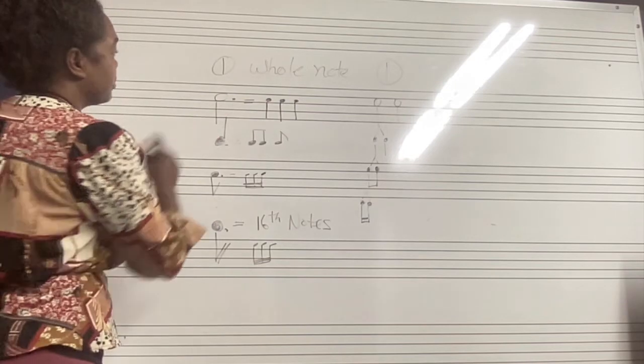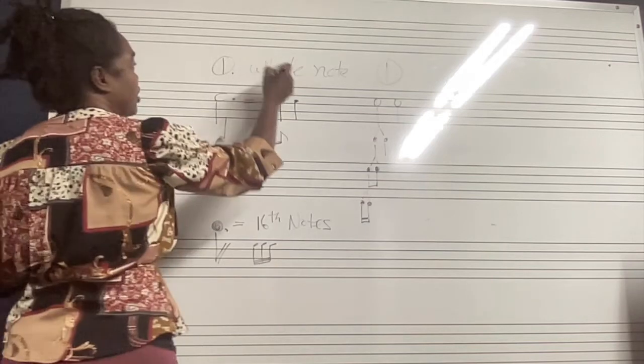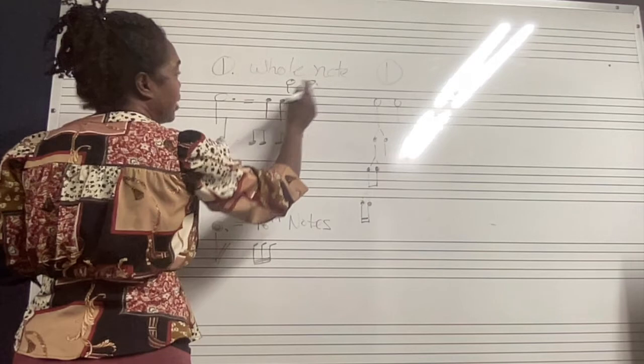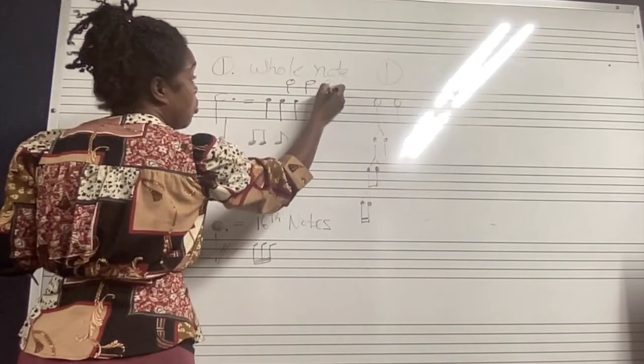If you see a dot next to something, it's going to give you a half of something. If I put a dot next to a whole note, then it's going to give me an extra half when I break it down. One, two half notes usually equal a whole, but now it's allowing me to add one more half.